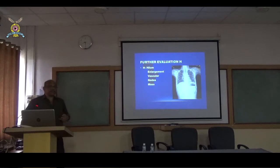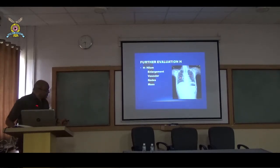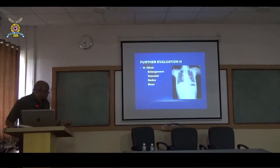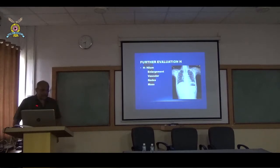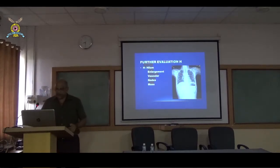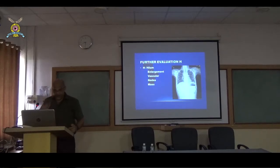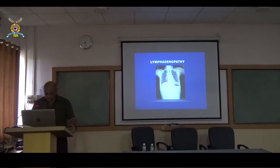Further evaluation includes the hila of the lungs — where the right and the left pulmonary arteries take their origin. We need to see whether they are normal or abnormal. Here, both hila are enlarged, and higher up in the paratracheal area there is lobular enlargement due to lymph nodes — this is due to lymphoma causing enlargement of the paratracheal and hilar lymph nodes. This is lymphadenopathy.